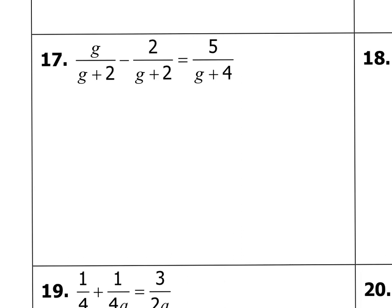So for number 17, if you can see, my denominators on my left hand side are the same and it is also a subtraction problem. So I'm just going to go ahead and combine those together. It's going to make this problem so much easier. So if I combine that together and do the math on that side, I'm going to get g minus 2 over g plus 2 equals 5 over g plus 4.